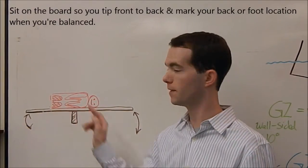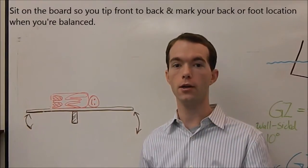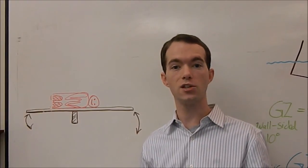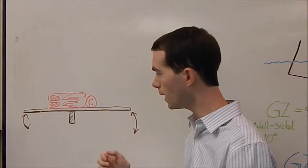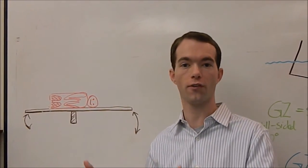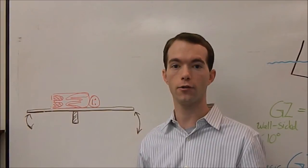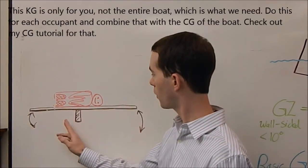Now since people are bilaterally symmetric, we're going to assume that the third axis of your CG is right down the middle of your body. So with this measurement, this measurement, and the center of your body, you know exactly where in 3D space your CG is going to be when you're seated in your boat. And you can do this for any position of course, you just have to recalculate it any time you decide to adopt a new position. But it's quite simple to do.